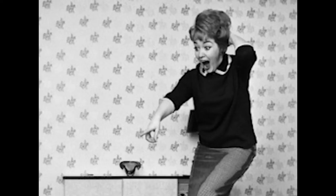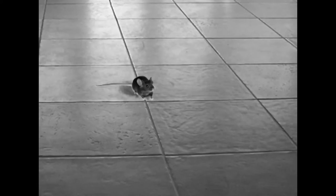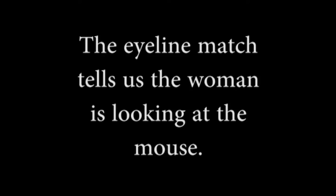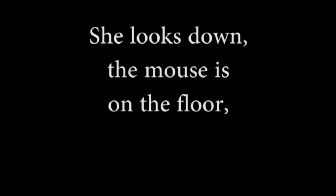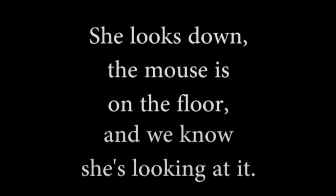Eyeline match is a method of joining images that suggests a connection between different things. For example, imagine footage of a woman looking towards the ground with a horrified expression on her face. Then the film cuts to an image of a mouse scurrying along the floor, and now we understand why the woman is looking horrified — she has seen the mouse on the floor. But why do we make this connection? The camera does not pan from the woman to the mouse in the same clip, so how do we know the images are associated? We make the assumption in our minds because of the eyeline match.